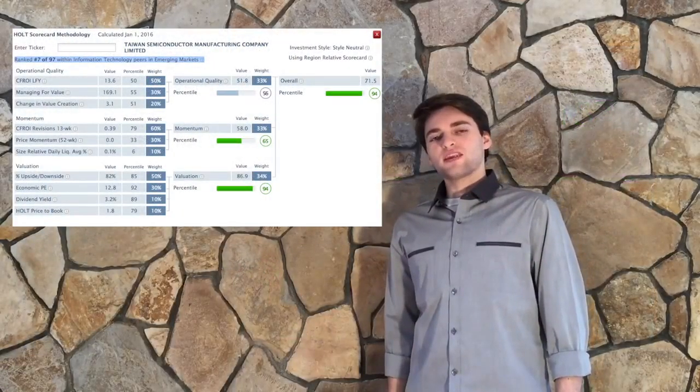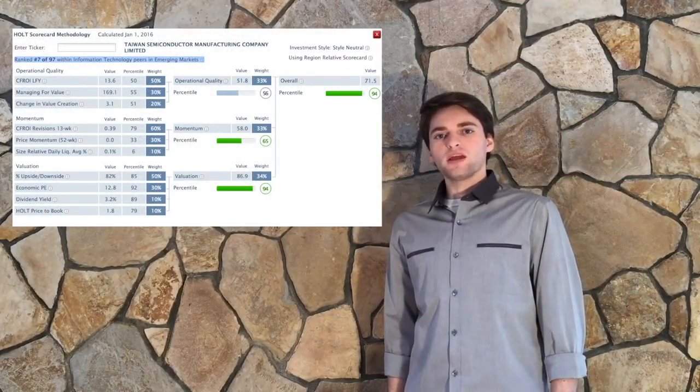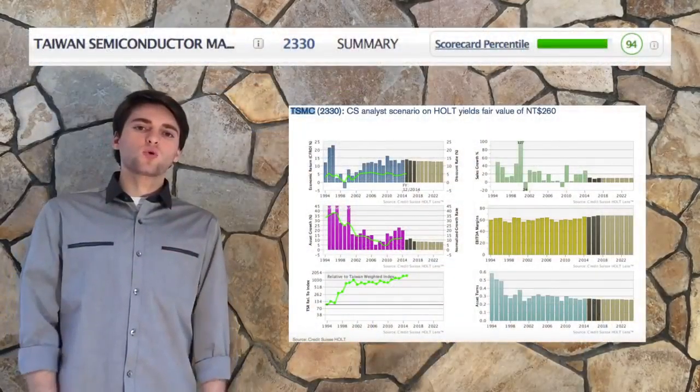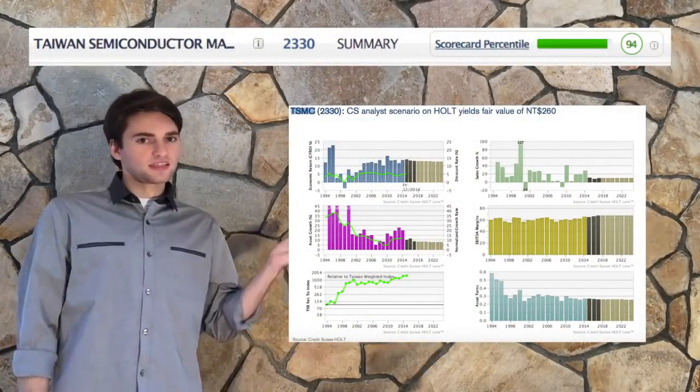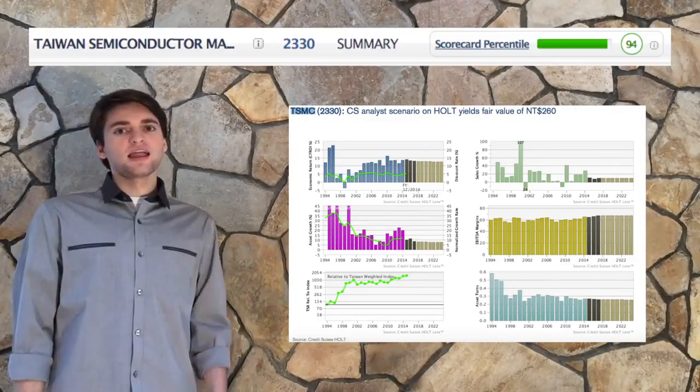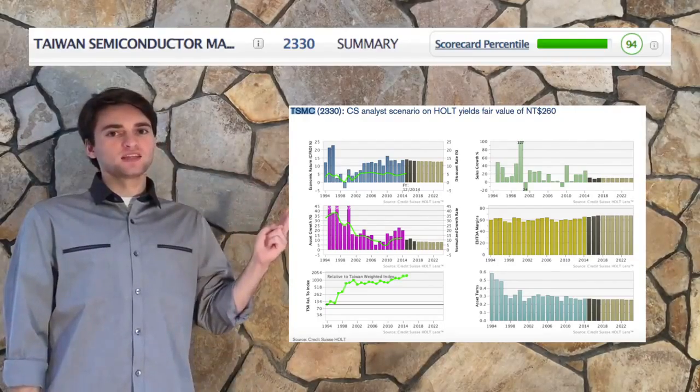TSMC was ranked 7 out of 97 by the Holt Information Technology Sector. The company has a Holt Lens Scorecard rating of 94%, thus indicating that it's reliable and attractive to investors.